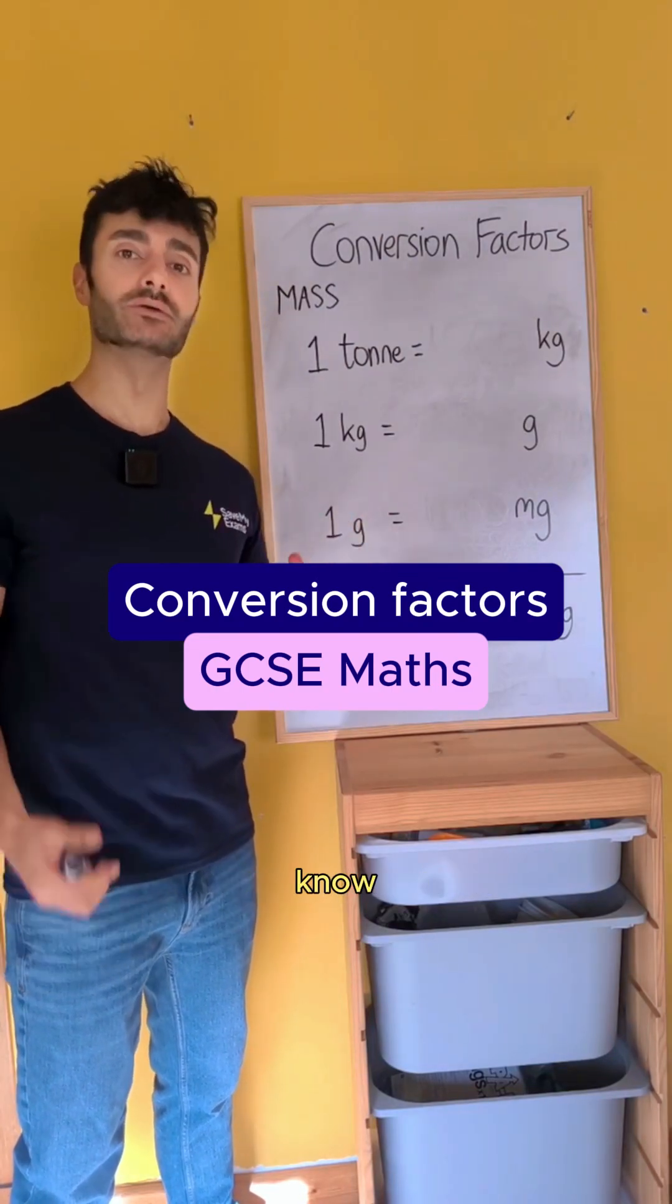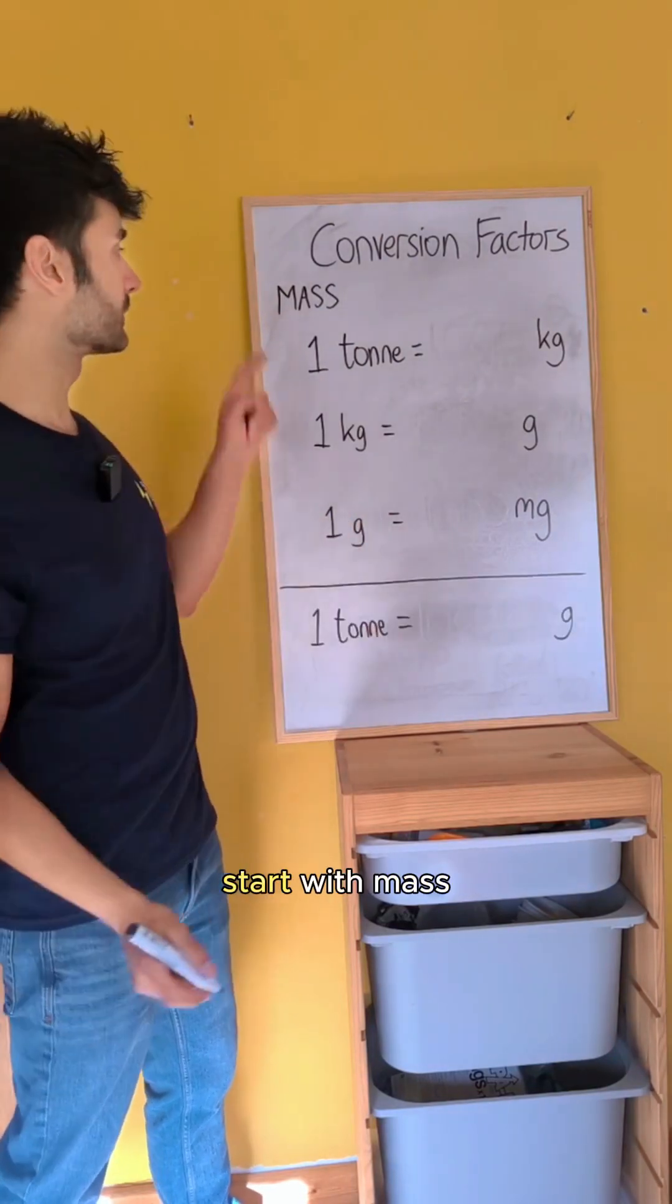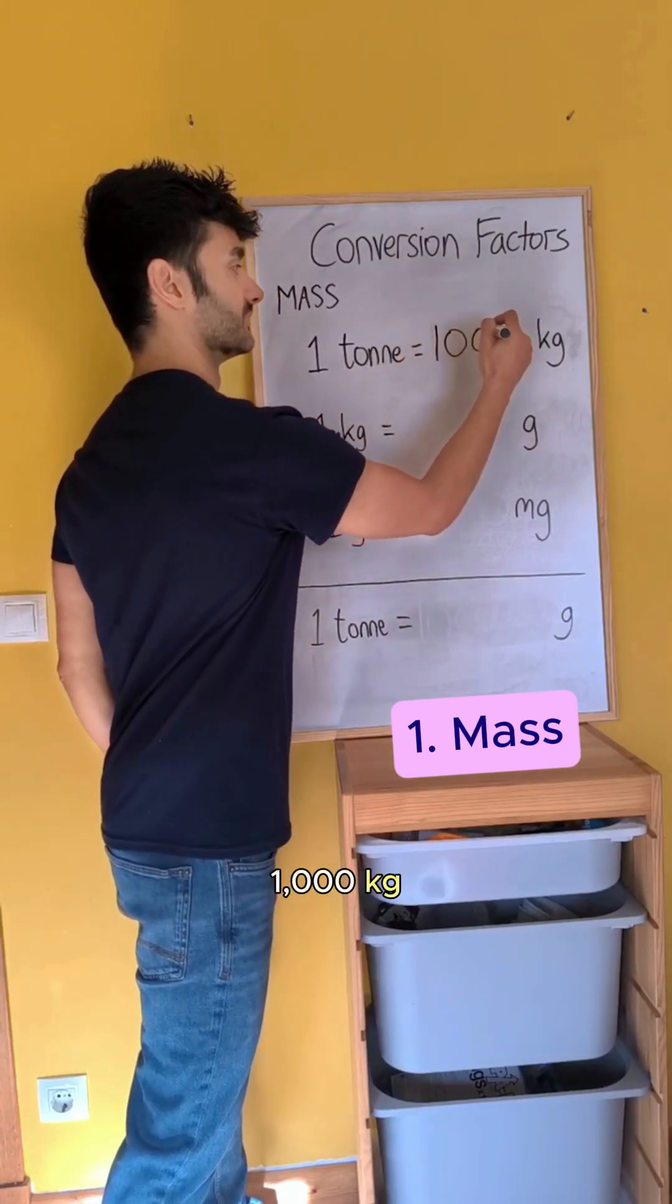These are the conversion factors that you need to know for GCSE maths. Start with mass. One ton is a thousand kilograms.